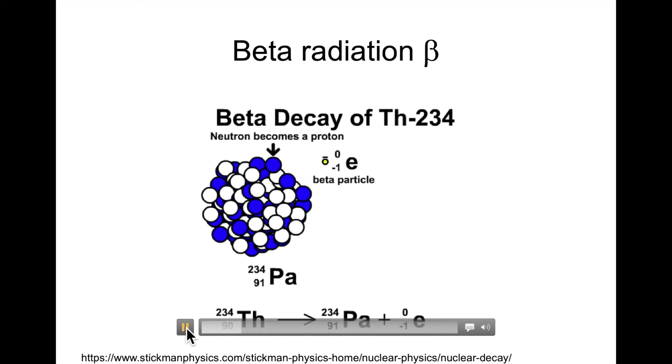The neutron, which is white, becomes blue because it becomes a proton, and the small difference in mass between the two is what is kicked out. It's called a beta particle and it looks somewhat like an electron.